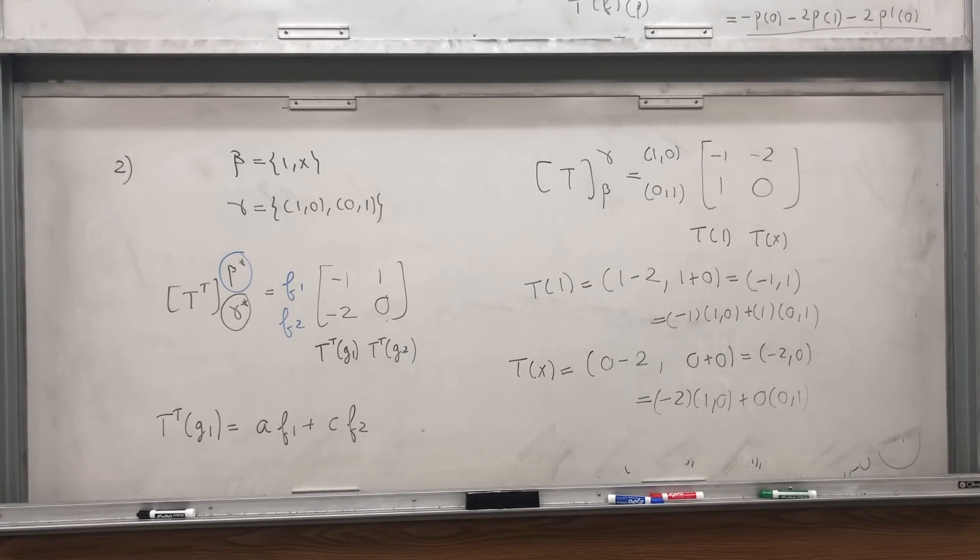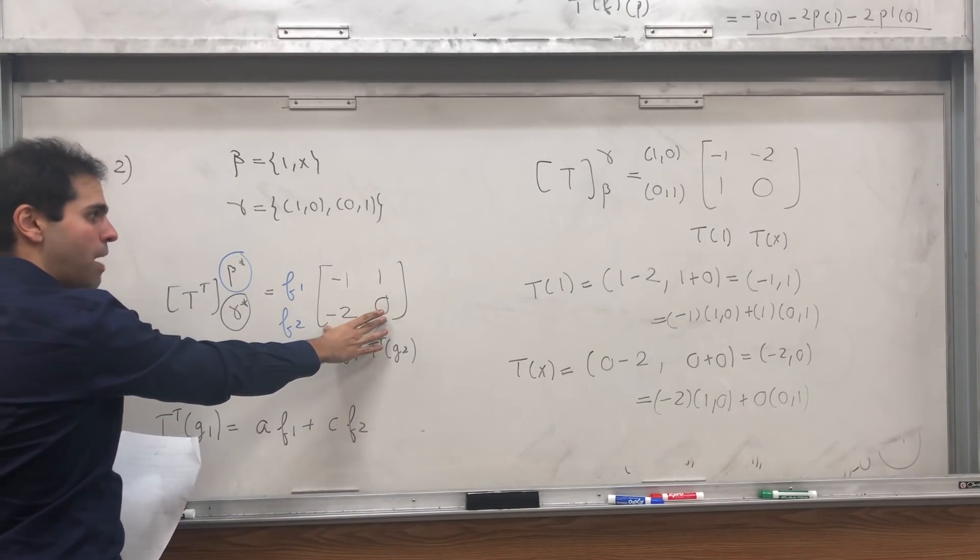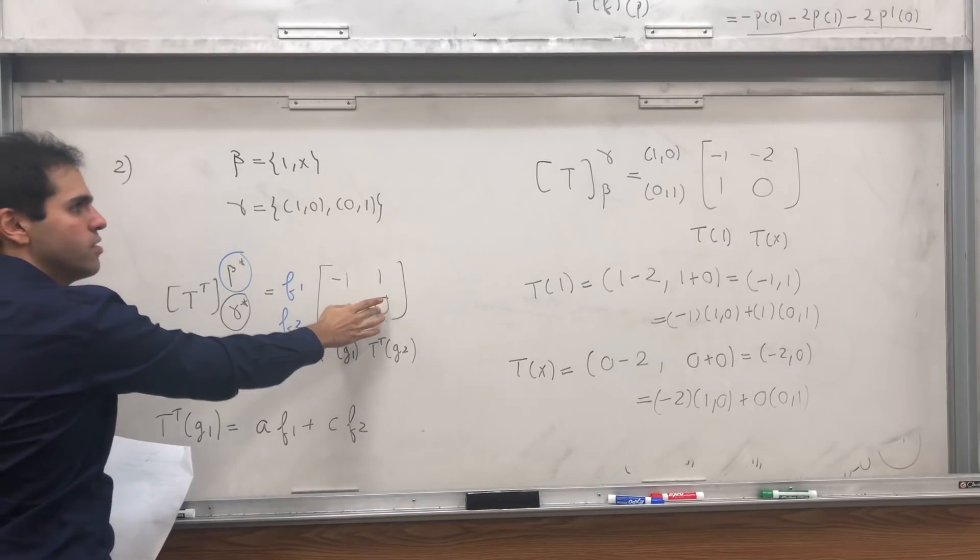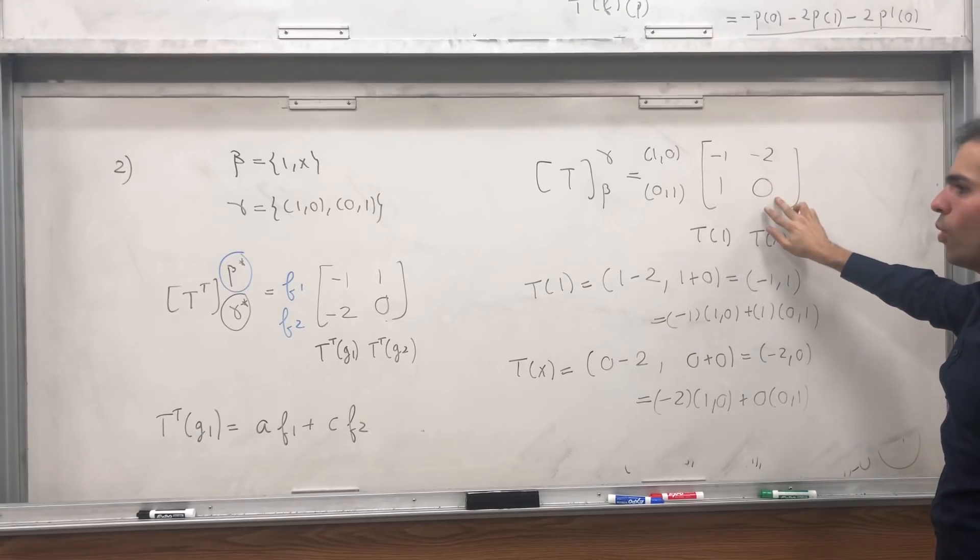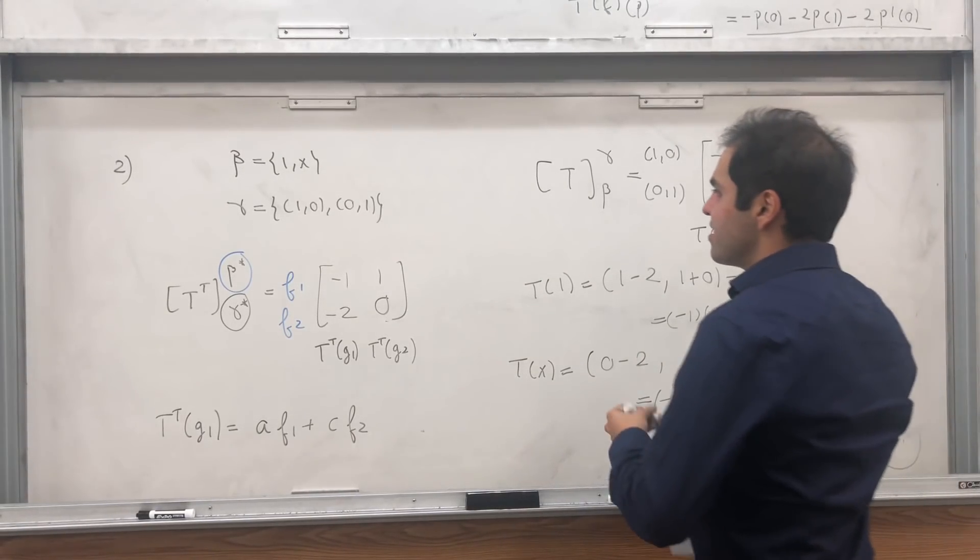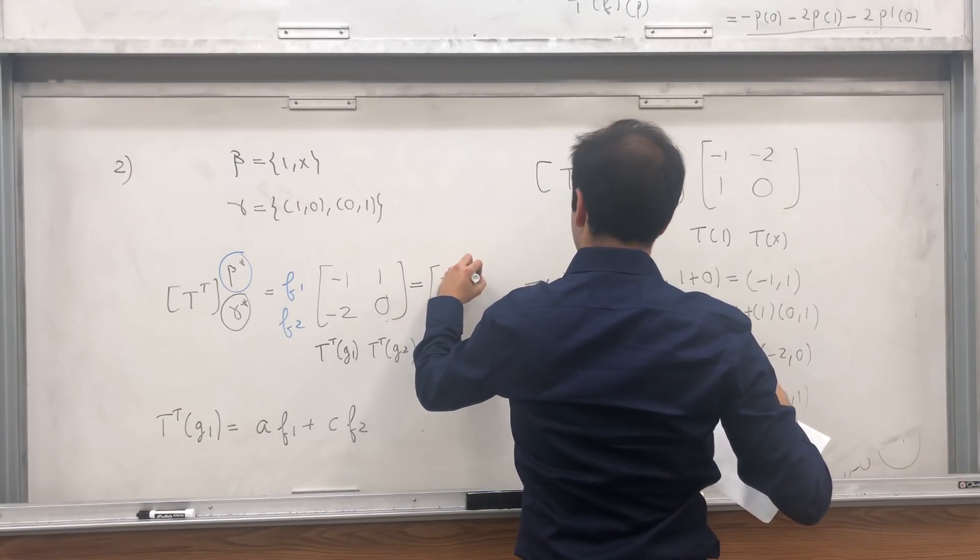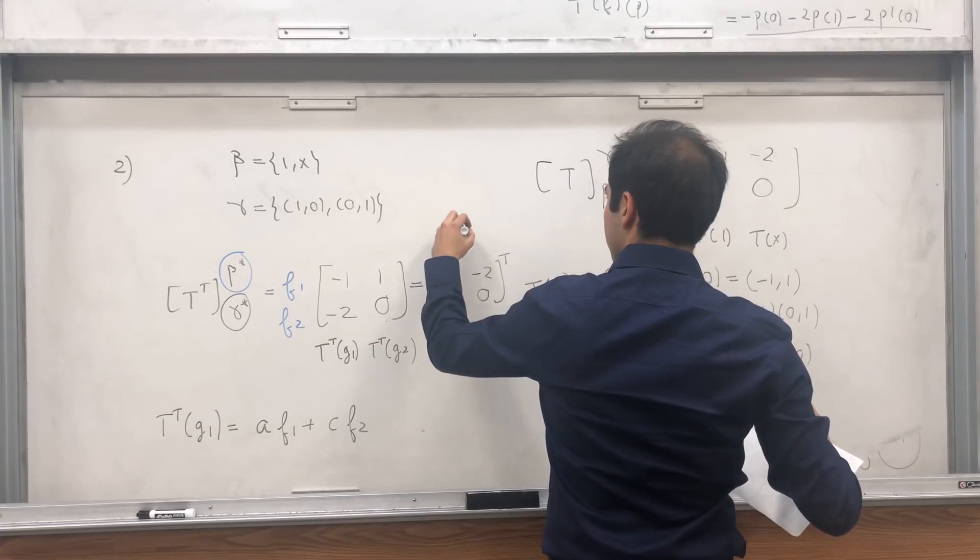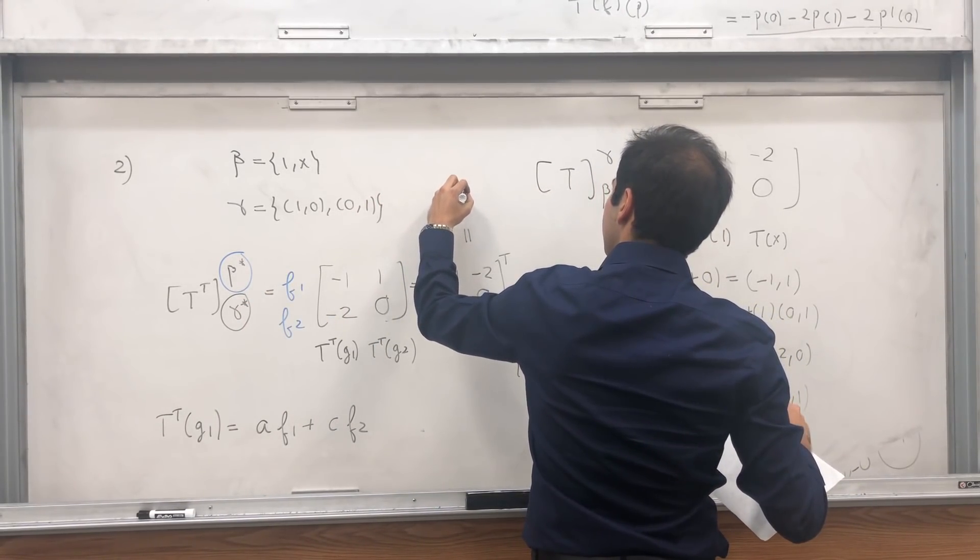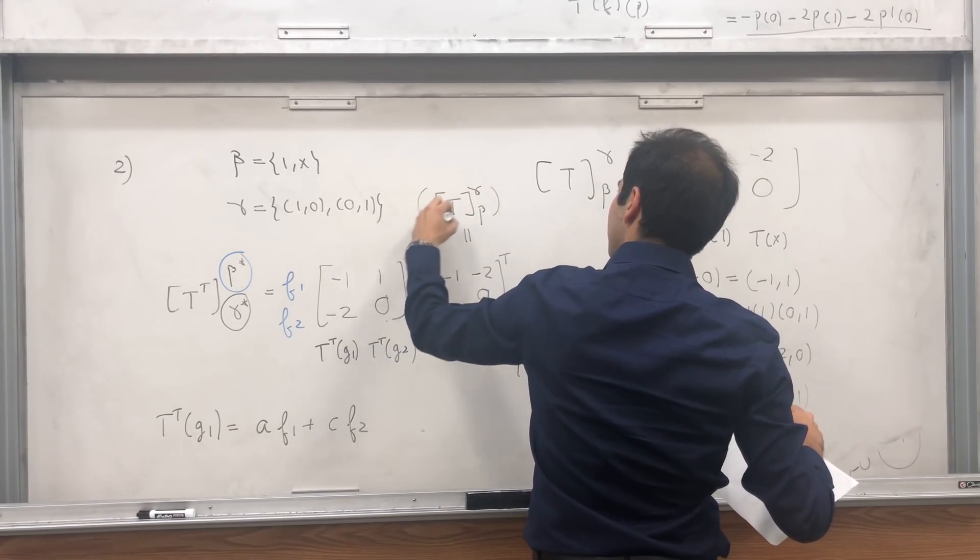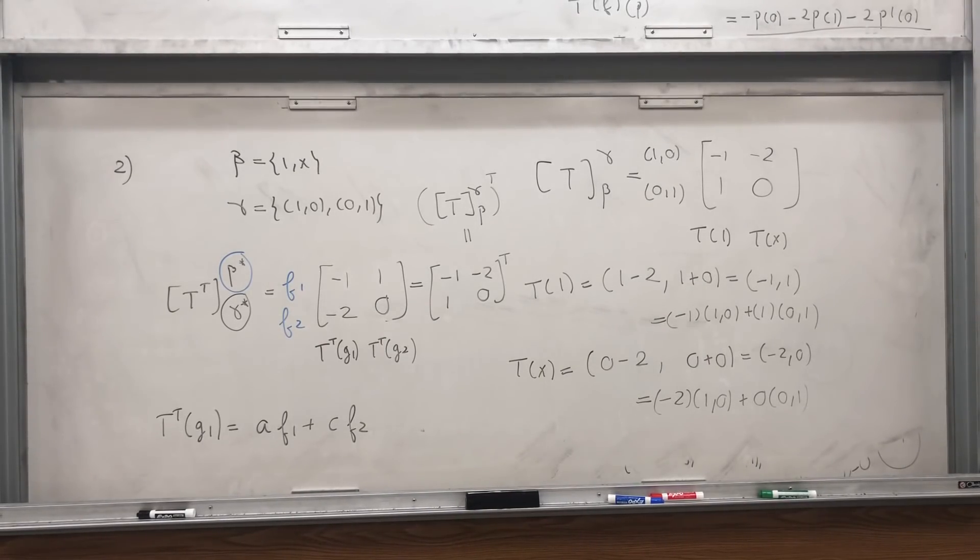And yes, that works, because here we have T transposed, which is minus 1, 1, minus 2, 0. Here we have T, which is minus 1, minus 2, 1, 0. And notice, it's precisely the original matrix transposed. So the matrix of T transposed equals to the matrix of T transposed. So indeed, it is correct.